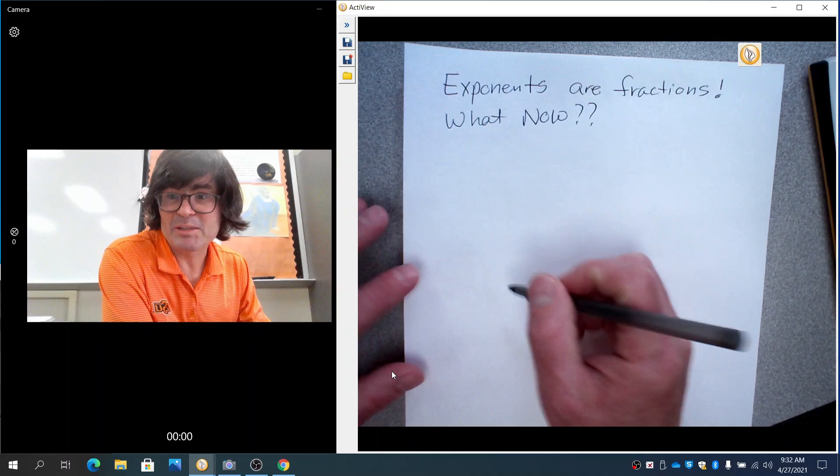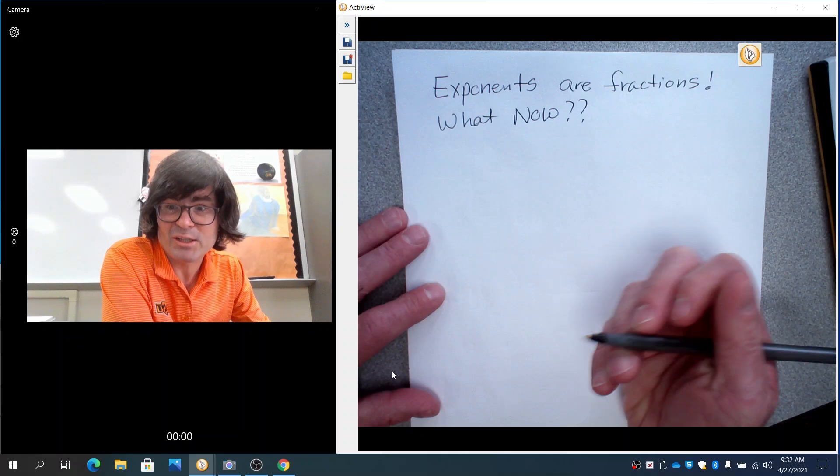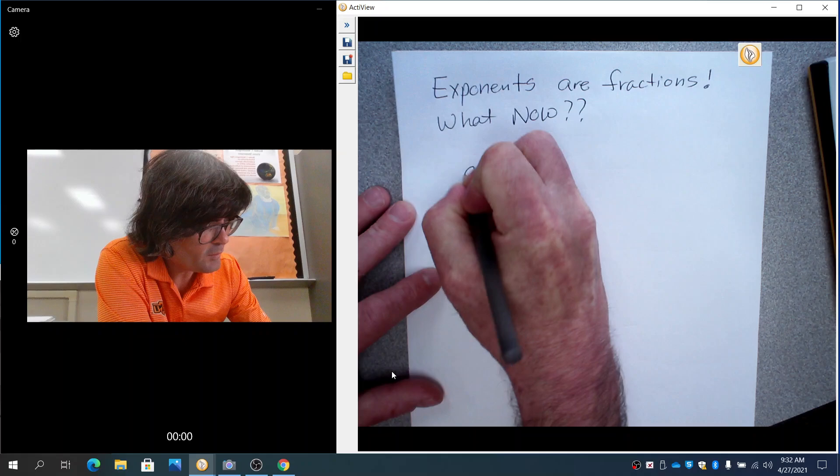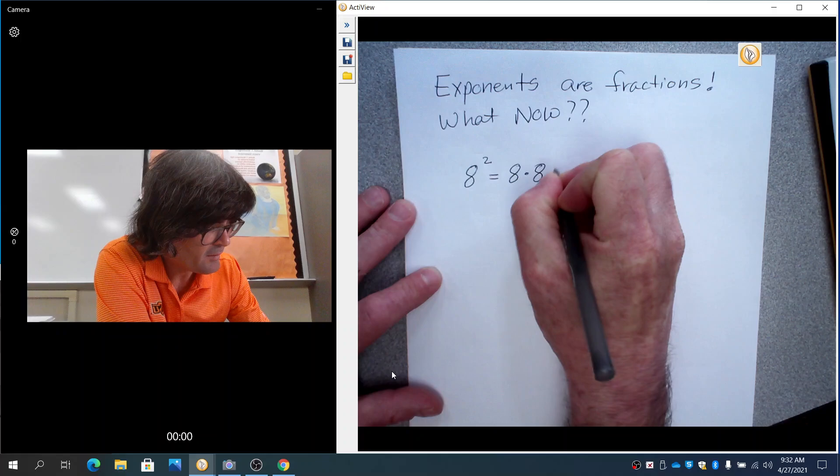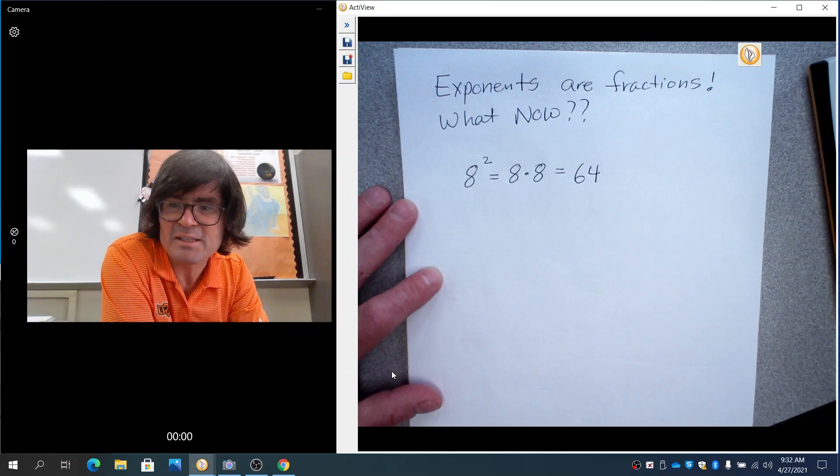So let's just talk about what an exponent does first and what the fraction implies. I'm going to start with the number 8. If you have 8 squared, what that means is you have 8 times 8, and that makes 64. So 8 squared is 64.